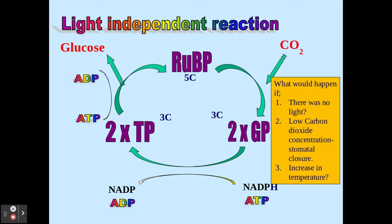First of all, if there is no light or little light, then this means I'm not going to get as much NADPH, or reduced NADP, or ATP from the light dependent stage. This means my GP cannot be phosphorylated or reduced as easily to form TP. So I'm going to get a buildup of GP, and my TP is going to decrease in concentration in the plant, because this side of the process can still occur.